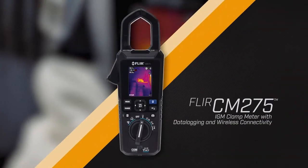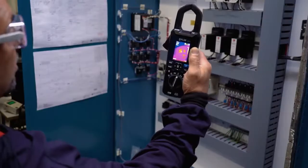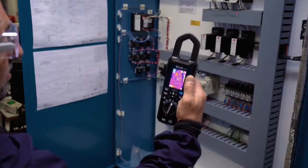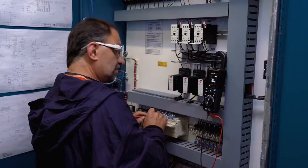Introducing the FLIR CM275 IGM Clamp Meter with Data Logging. This all-in-one clamp meter thermal imager can accelerate inspections and help you solve complex electrical system issues.